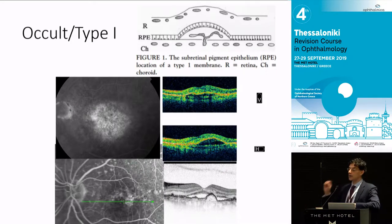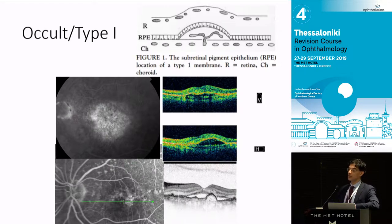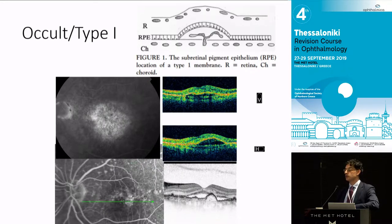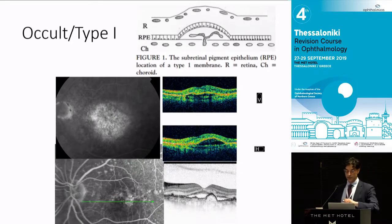We're now realizing that type 1 CNVs can be quiescent and just sit there. So you have a patient you're injecting in one eye and scanning the other — you can see quiescent type 1 CNV in the fellow eye with no fluid. The weight of evidence at the moment is not to initiate treatment, because it may not progress for years, though there is a higher risk of progression.